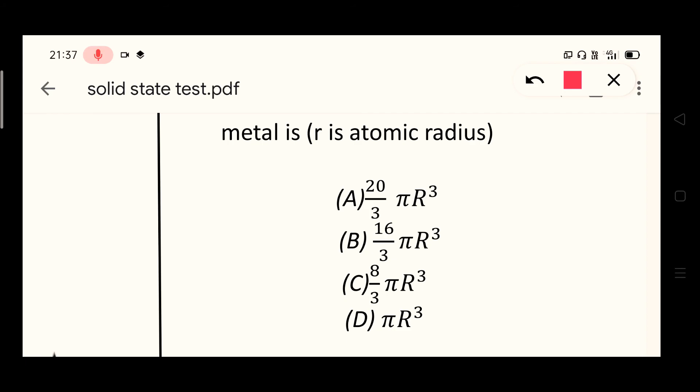Firstly, do you know how much is the effective number of atoms, that is Z, in FCC? That is 4. And what is the volume of one sphere? Very good. So I am putting now here 4 times 4 by 3 π r³.